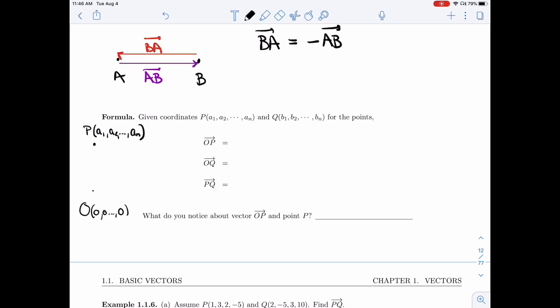So my change in x was from 0 to a_1, so my change in x is a_1. And then my change in y is a_2, and so on. So the vector OP is the vector whose coordinates are a_1, a_2, a_n.